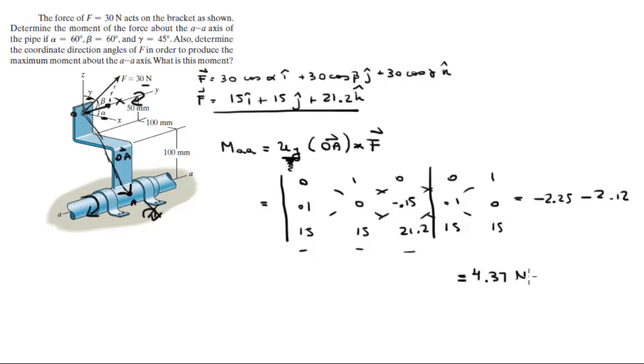Again, this is in newtons and this is in meters. I forgot to tell you something: I converted these millimeters into meters. So this 50 millimeters is 0.05, this is 0.1, and this is 0.1.